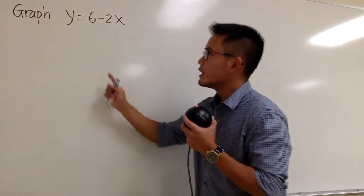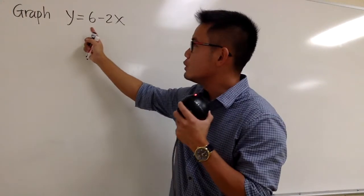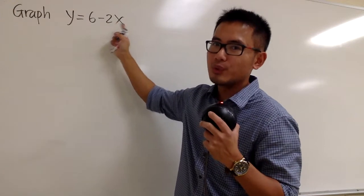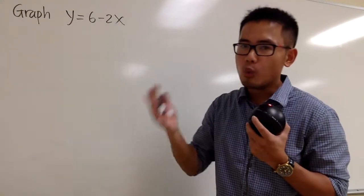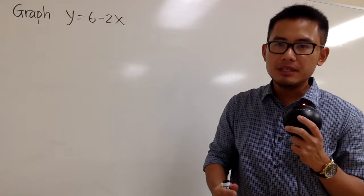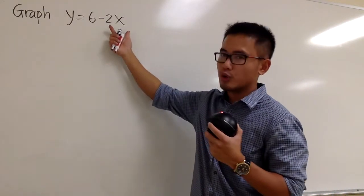Okay, we're going to graph this equation. It says y equals 6 minus 2x. This is not in the formula we like. We like to have y equals mx plus b. The term that has the x should go first.